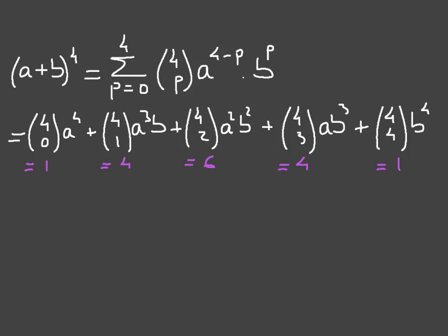What we notice here is there's some sort of symmetry in the binomial coefficients. If I focus on the middle term, I can see that on either side of it, the binomial coefficients are mirror images of each other — and that will always be the case. Also, the first term and the last term both have a binomial coefficient equal to 1, and that will always be true regardless of what power the parentheses is raised to. So we don't need to calculate the binomial coefficients for the first and last terms.